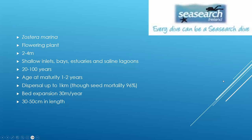Zostera marina is a flowering plant, which is obviously slightly unusual to be found in the sea. We get it mainly from 2 to 4 metres depth — those would be good seagrass depths. They tend to be in sheltered shallow inlets, bays, and estuaries. Zostera beds can live from 20 to 100 years, and reach sexual maturity at 1 to 2 years, so it wouldn't take a lot of conservation effort to let seagrass beds with recovery potential to recover. Dispersal of seeds can be up to a kilometre, though seed mortality at that distance is 96%. Beds have been found to expand by up to 30 metres a year, so there's obviously good potential for seagrass habitat to recover if allowed to.